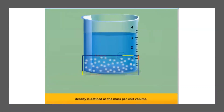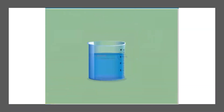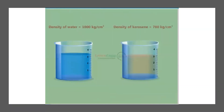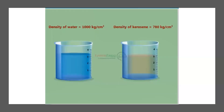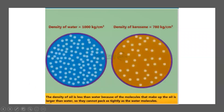Density is defined as mass per unit volume. The density of water is 1000 kg per meter cube and the density of kerosene is 780 kg per meter cube. The density of oil is less than water because the molecules that make up oil are larger than water molecules, so they cannot pack as tightly, and hence the density of water is greater than the density of oil.